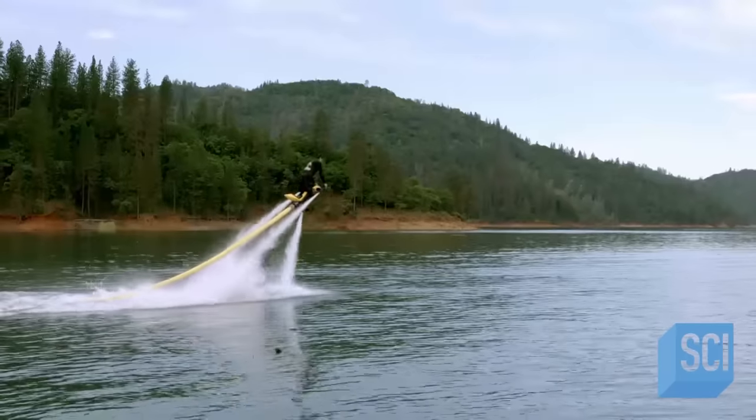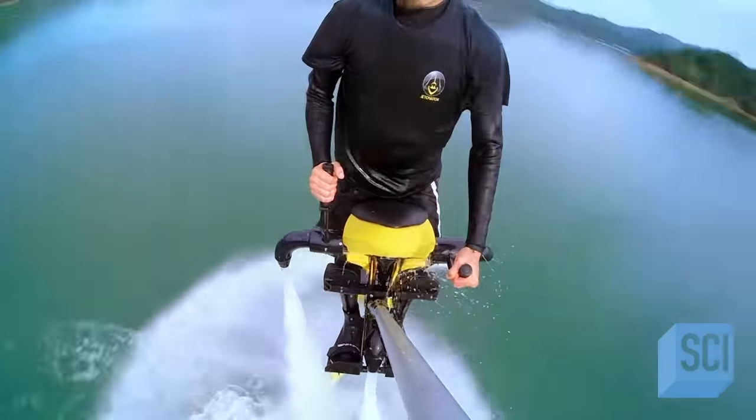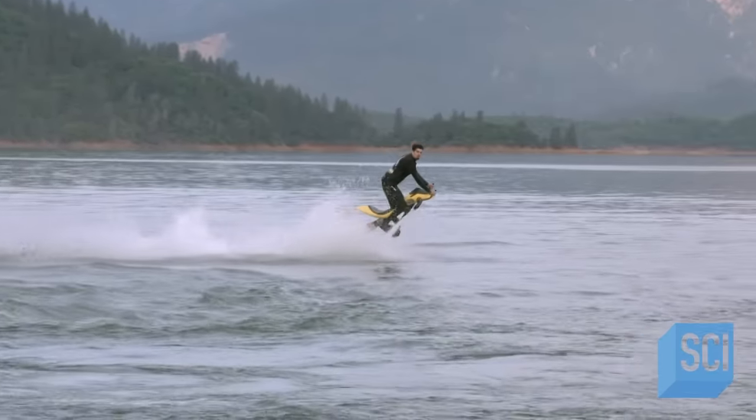The jet ski's water thrust feeds three jet nozzles on the flying water bike. One propels the bike upward, the other two feed jet control nozzles that maneuver the bike.